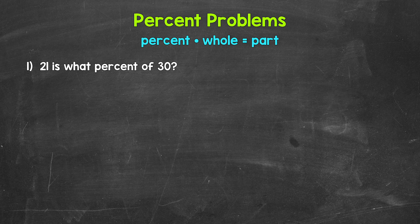Let's jump into number one, where we have: 21 is what percent of 30? I'm going to start by writing the equation using variables, and then we will plug in. So we have percent times whole equals part: P for the percent, W for the whole, and A for the part.